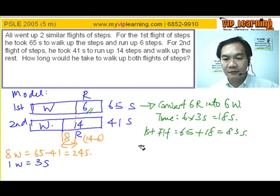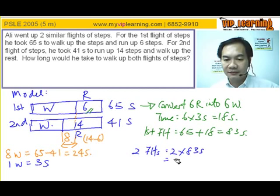So therefore, for 2 flights, the total 2 flights of steps, will be 2 times 83 seconds, giving you 166 seconds. Easily done, right? 2, 2, 3, 2, 2, 2, 2, 6.